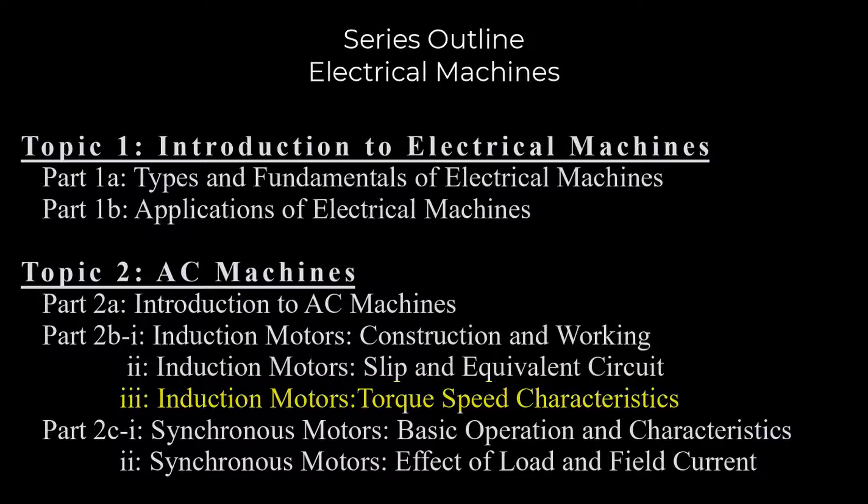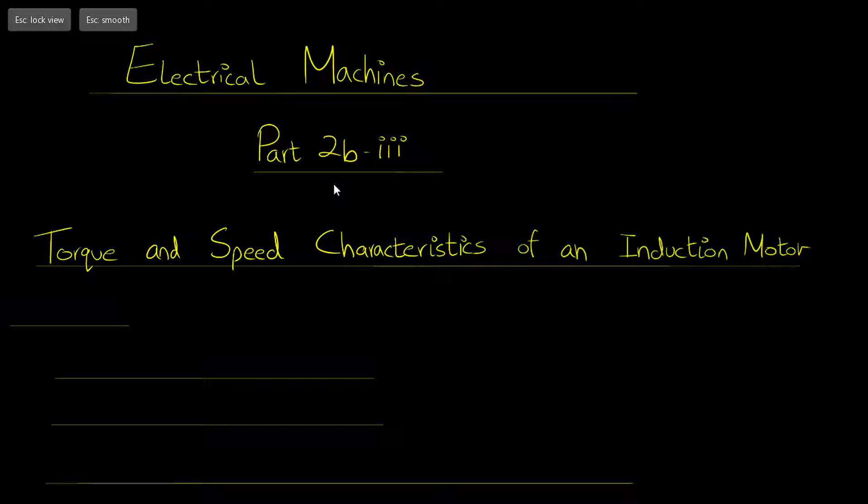Electric Machines Part 2B Section 3: Torque and Speed Characteristics of an Induction Motor. This is the second part of Topic 2 in this series of Electric Machines and is a continuation of our discussion of induction motors. In the preceding subparts, we discussed the slip and equivalent circuit of an induction motor.